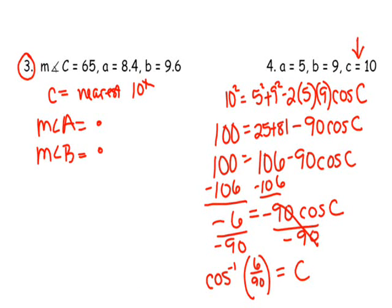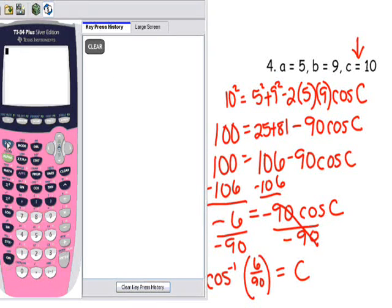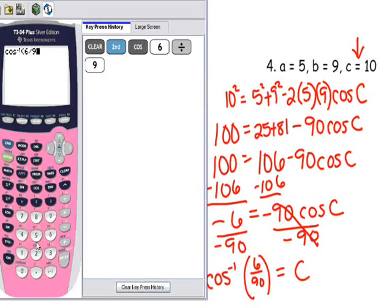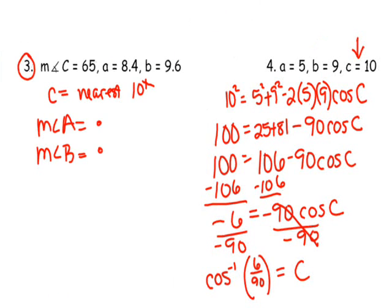So, we're going to go ahead and put this in our calculator. So, I'm going to do second cosine and then 6 divided by 90 and hit enter. And I find out that C measures 86 degrees, 86.2 degrees technically. So, measure of angle C equals 86.2 degrees.